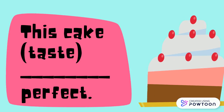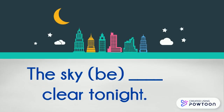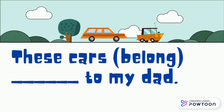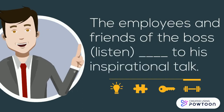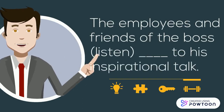What should be the correct form of the verb in this sentence? The sky [be] clear tonight. These cars [belong] to my dad. Write the correct form of the verb on your paper. The employees and the friends of the bus [listen] to his inspirational talk. Write the correct form of the verb on your paper.